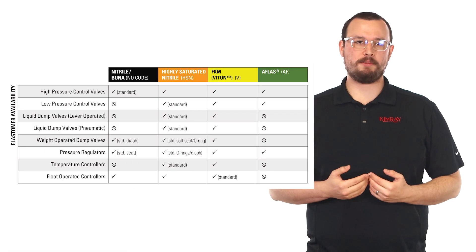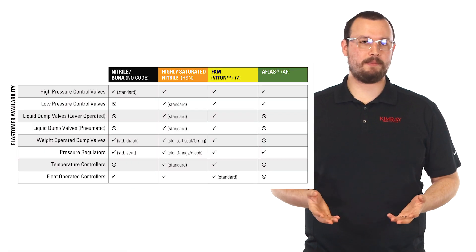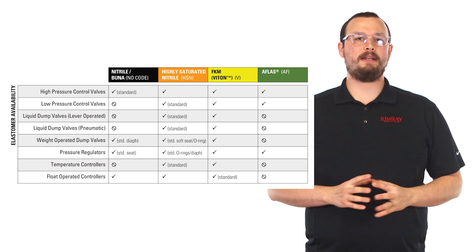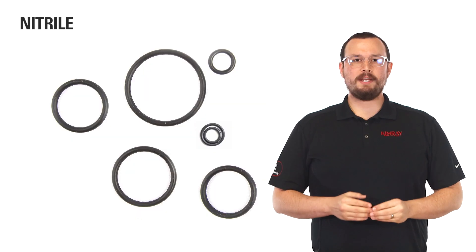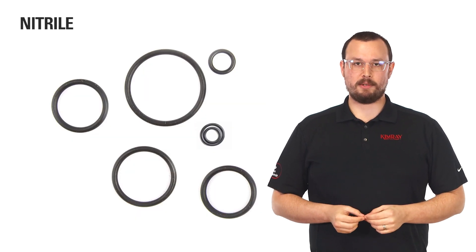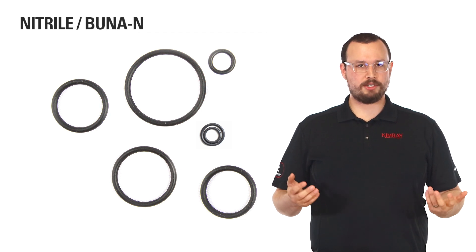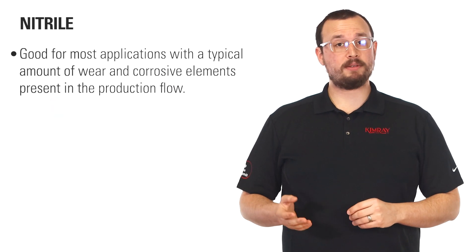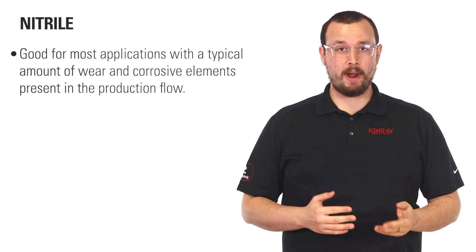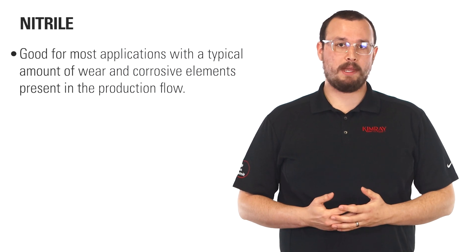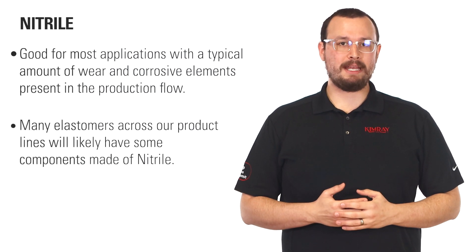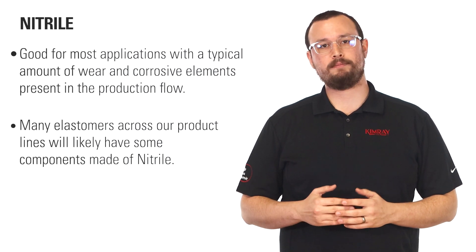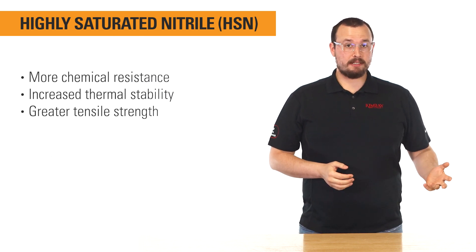Kimray has narrowed down our options to help make the selection easier. There are some components within products that have further options, but these four materials are the primary considerations. Nitrile is a synthetic rubber commonly used in elastomers. It's also known as BUNA-N or just BUNA, which is a common name for all classes of nitrile. It's good for most applications with a typical amount of wear and corrosive elements present in the production flow. No matter which kit or selections you make, many elastomers across our product lines will likely have some components made of nitrile.